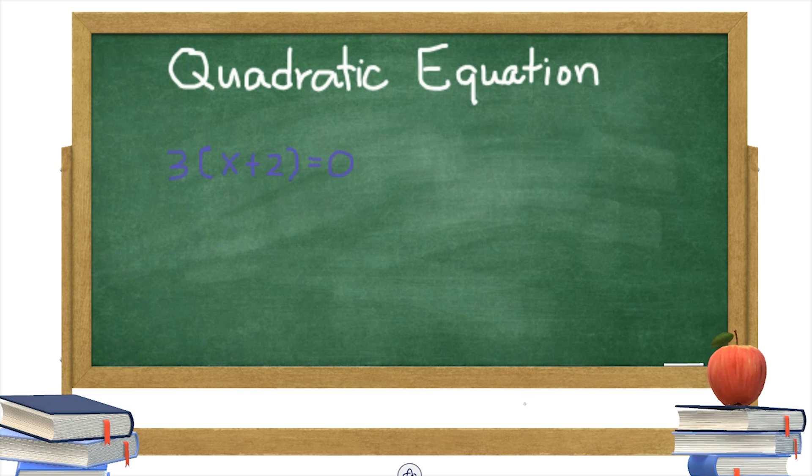Is this a quadratic equation? Let's check. First, multiply 3 times x, that is 3x, then 3 times 2 is 6, so it becomes 3x plus 6 is equal to 0.